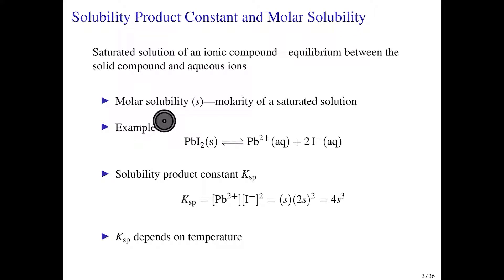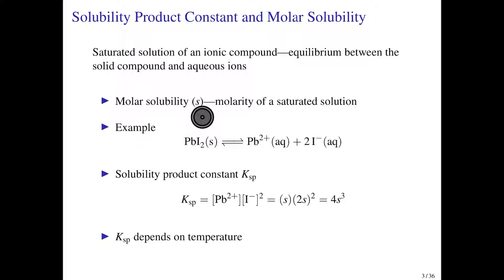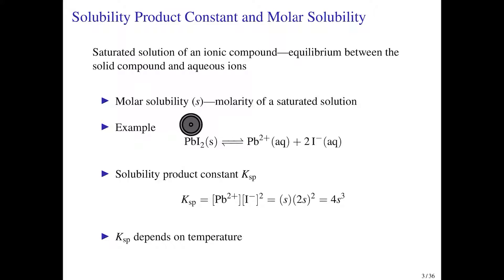The molar solubility refers to the amount of the solid that has dissolved to form ions. The letter s refers to moles per liter of the compound that has dissolved. You can use the internal stoichiometry of the compound to relate the solubility to the concentrations of the ions in solution. For example, if s moles per liter of this compound dissolve, then you will form s moles per liter of lead²⁺ ions in solution.